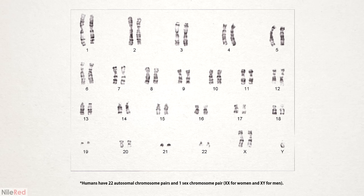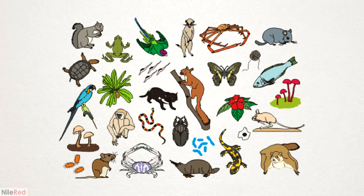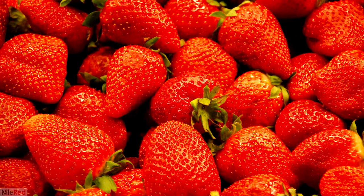What might be interesting is that the number of chromosomes doesn't have anything really to do with the sophistication of the organism. For example, a typical potato has 48 — two more than a human. What I think is really cool is that it's actually possible to isolate DNA from pretty much any living thing. For this video, I've decided to get it from strawberries because it's one of the easiest sources.